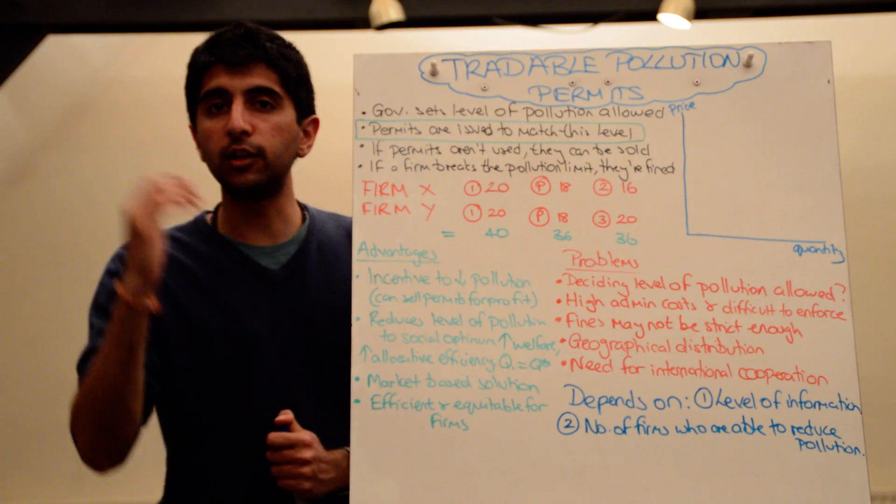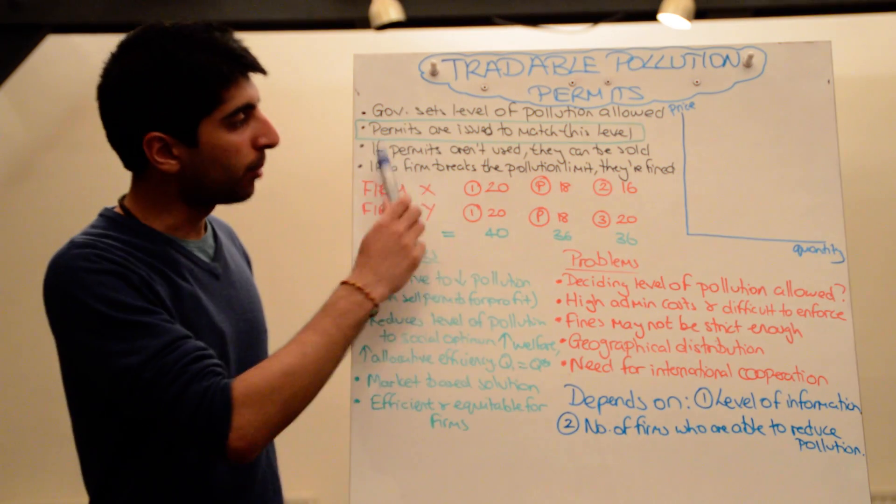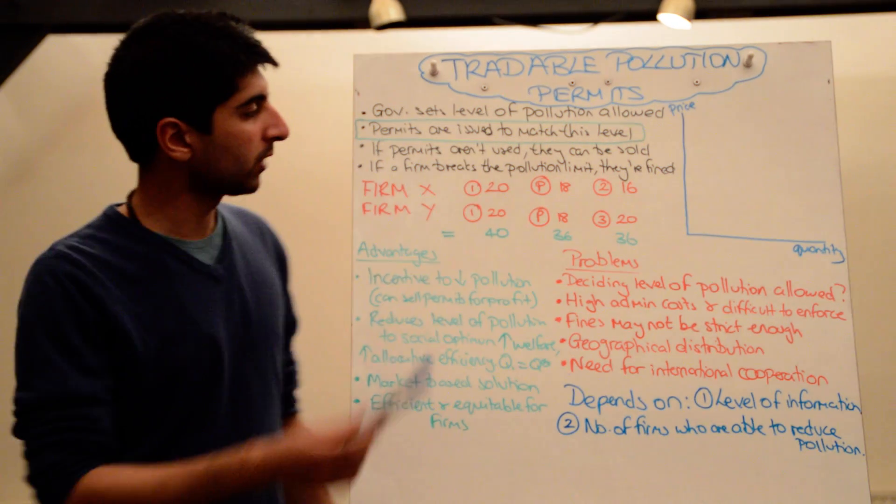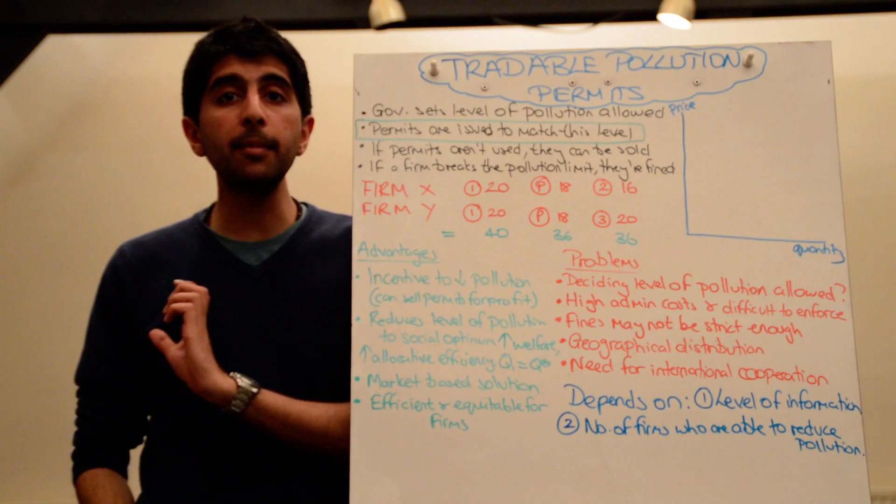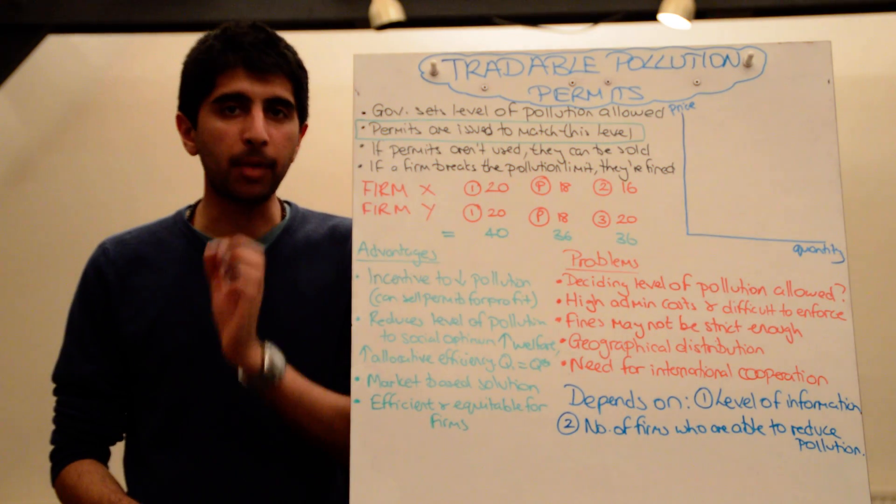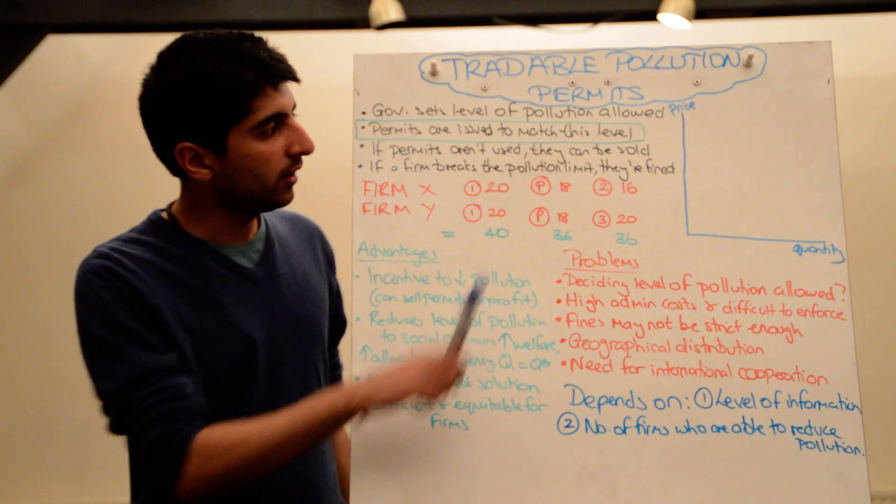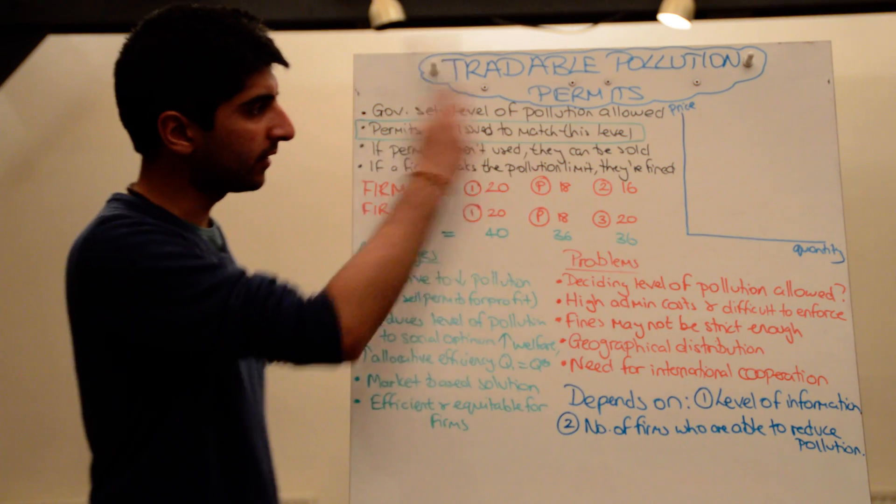Firms might have found it hard to reduce their levels of pollution. So permits aren't used, they can be sold on. And if a firm breaks their allowed pollution limit, if they produce more than what their permits allow them to pollute, then they are going to be fined. That's how the scheme works.